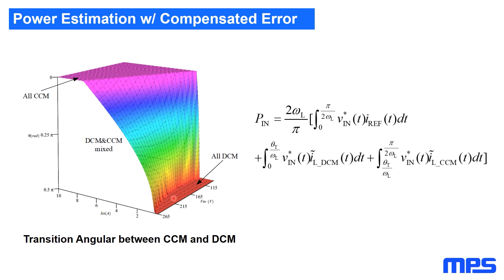With all those analysis in this paper, the input power can be estimated as this equation. First, a base item according to the sampled input voltage and the reference inductor current, and then followed by two error compensation terms based on the CCM and DCM error modeling and the transition angular detection.